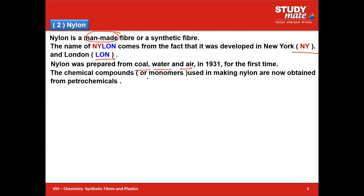The chemical compounds, or monomers, used in making nylon are now obtained from petrochemicals. Earlier nylon was manufactured from coal, water, and air; however, in the current scenario it is manufactured from petrochemicals.